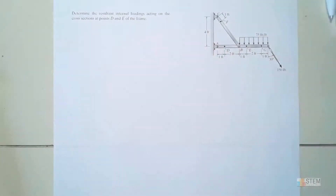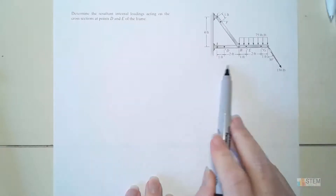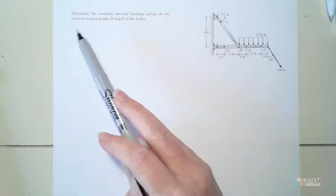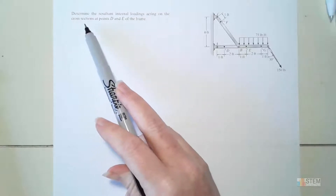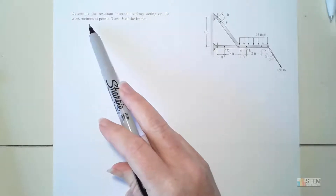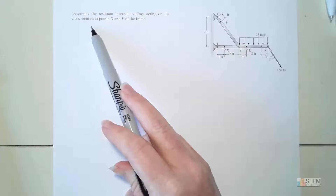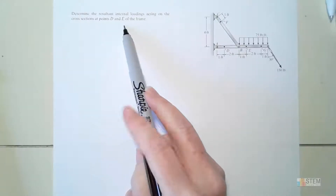Hey everyone. What we're going to do today is go over this problem I gave for a quiz a couple of weeks ago in my solid mechanics class. We're going to determine the resultant internal loadings acting on the cross sections at points D and E of the frame.